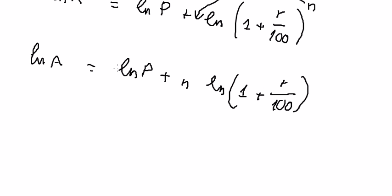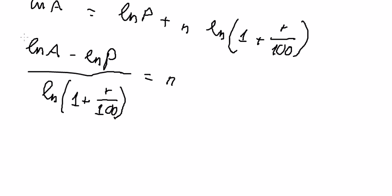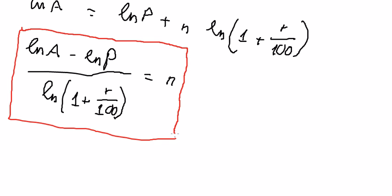We put Ln P on the left side, then divide both sides. So we get Ln A minus Ln P divided by Ln of 1 plus r over 100 equals n. This is the final answer. That's the end, thank you for watching.